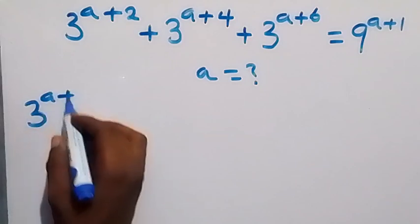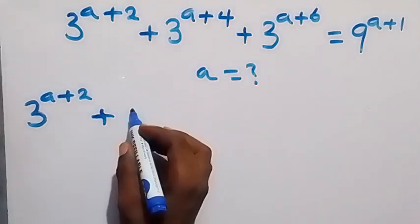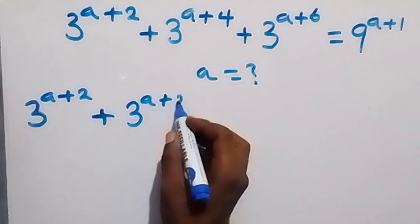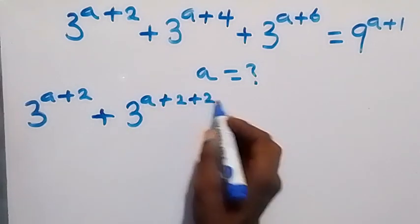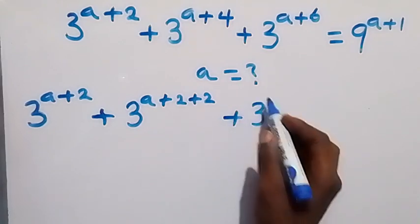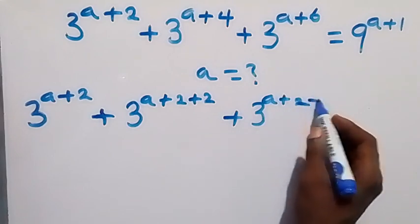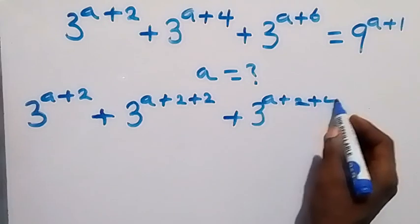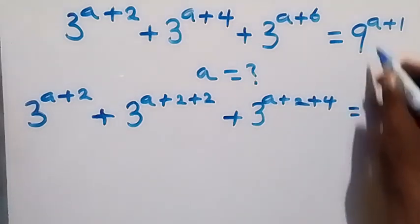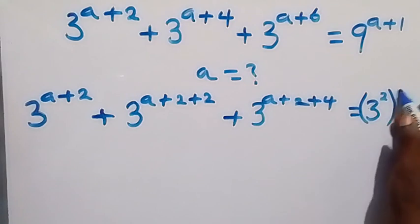Then plus, here let's separate this 4 in the form of 2 plus 2 — that's 3 raised to power a plus 2, plus 2. Now then plus, from here also we can write this as 3 raised to power a plus 2, then plus 4. Now then also equals to — here we can express 9 as 3 squared, which is raised to power a plus 1.